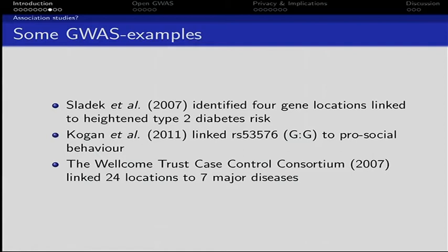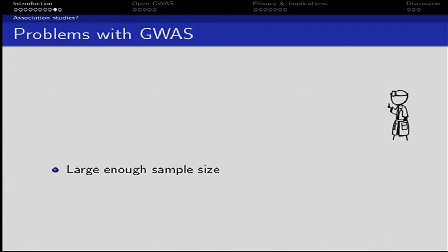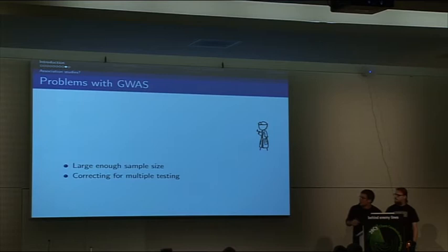There are always a couple of problems with genome-wide association studies: we have to have a large enough sample size, we have to correct for multiple testing, and of course, correlation is not always causation.